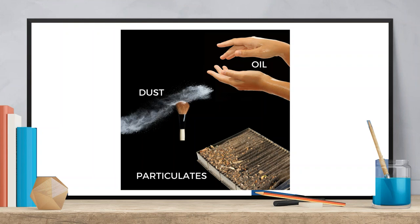There are three foes to fight. The first is oil — not oil from a can, but the oil on your skin that protects and lubricates our exterior, which gets transferred onto everything we touch. The second is dust, which we'll fight in many ways. The third is particulates. While dust is a particulate, I like to treat particulates as their own separate category in photo scanning.